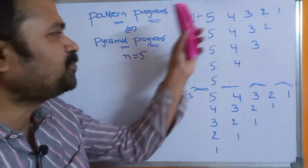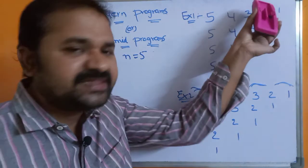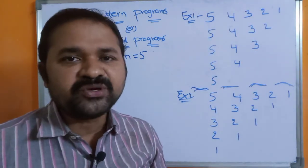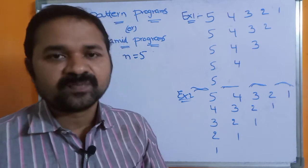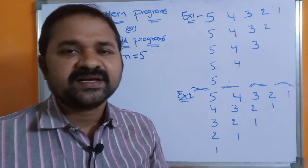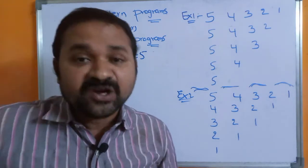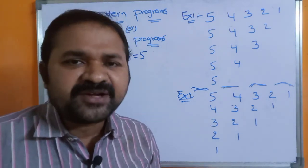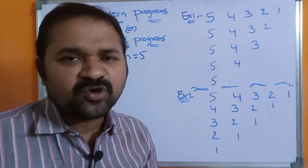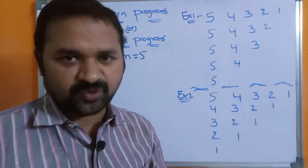To display output like this, we have to use a nested loop. Nested loop means writing a loop inside another loop. It is better to use a nested for loop, meaning writing a for loop inside another for loop.